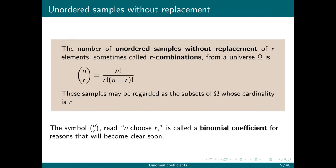The number of unordered samples without replacement of r elements—sometimes these are called r-combinations—from a universe omega is n factorial divided by the number of ways to order the stuff we don't care about and the number of ways to order the stuff we do care about. We write this in the strange notation called a binomial coefficient: we write this as 4 choose 2. These samples may be regarded as subsets of omega—think about it. What's a set? A set has no order and no repetition.